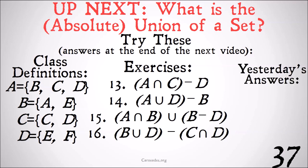As promised, here are the answers from yesterday's exercises. We have the difference of A and C, remembering that these are the same class definitions we had last time. The difference between A and C is just going to be the class of B, because if we take the C and D out of A, all we're left with is B.